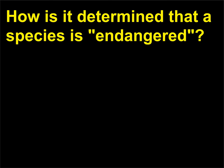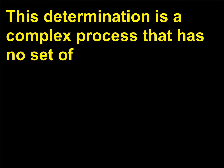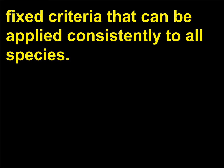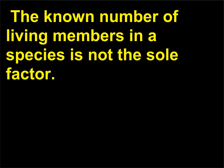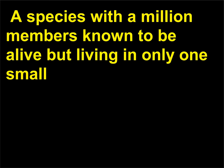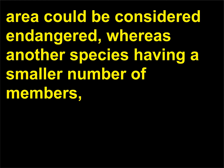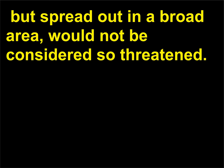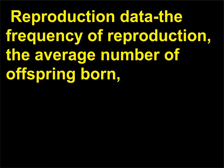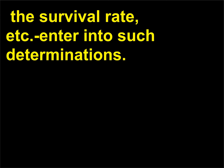How is it determined that a species is endangered? This determination is a complex process that has no fixed criteria that can be applied consistently to all species. The known number of living members in a species is not the sole factor. A species with a million members living in only one small area could be considered endangered, whereas another species with a smaller number of members but spread out in a broad area would not be considered so threatened. Reproduction data — the frequency of reproduction, the average number of offspring born, survival rate, etc. — also enter into such determinations.